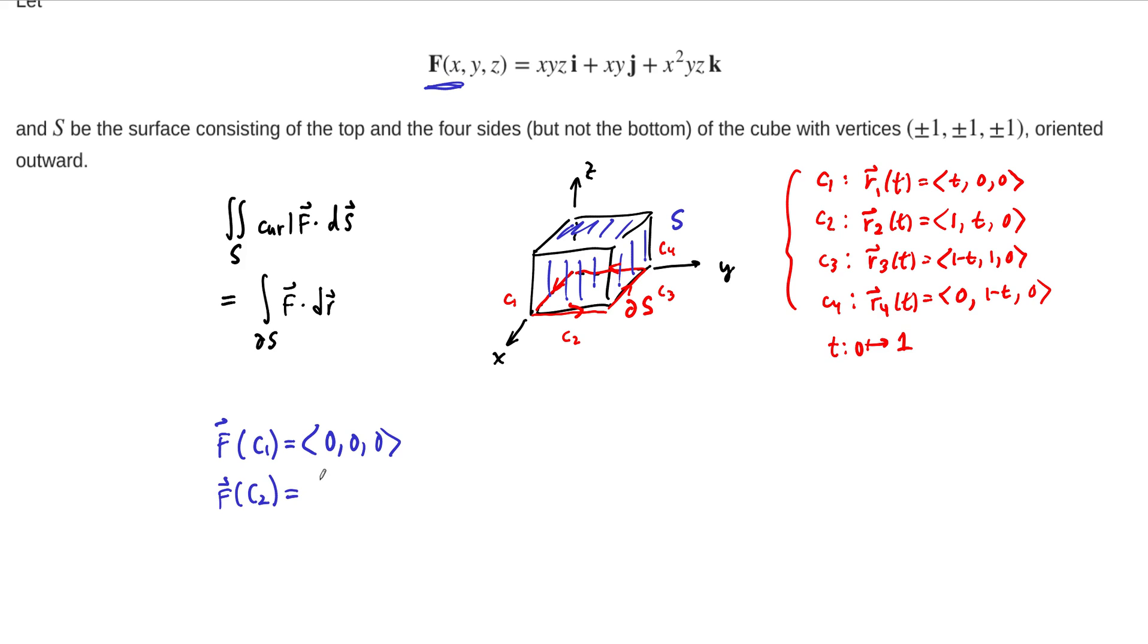Now we go on to C2. On C2, x is 1, and y is t, but z is still 0. Notice there's a z in each of these components. And by the way, z is always 0. So let's not even worry about that at all. It's always going to be 0, 0. And in the middle here, on this portion of the curve, we actually have a component. 1 times t, this is just t. So f along C2 is 0, t, 0. We're going to have to use that one.